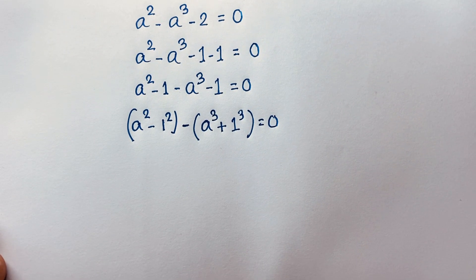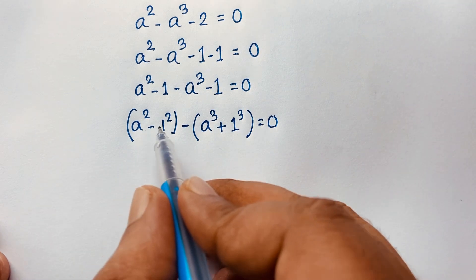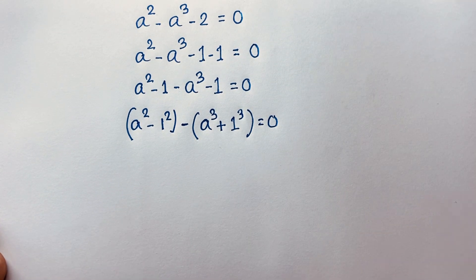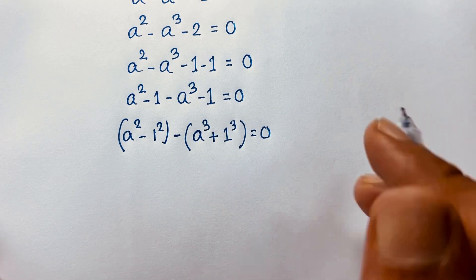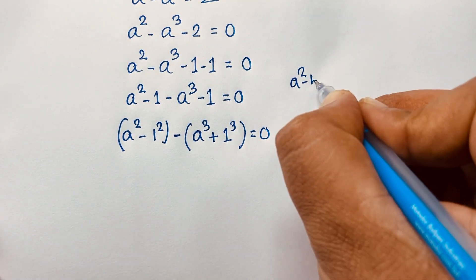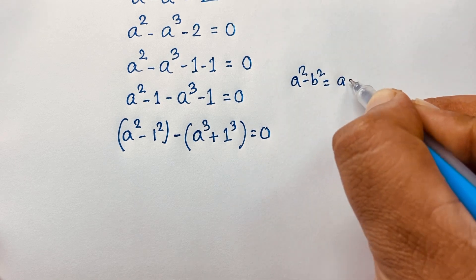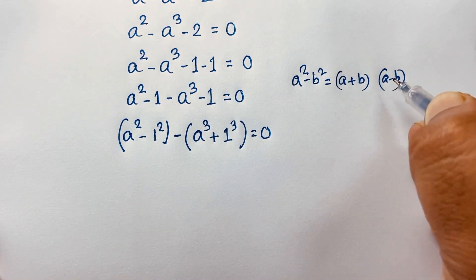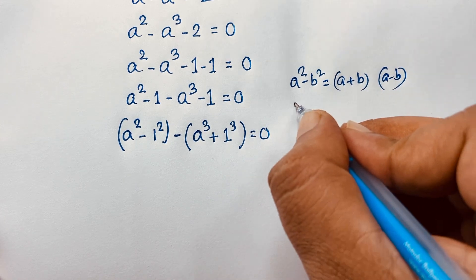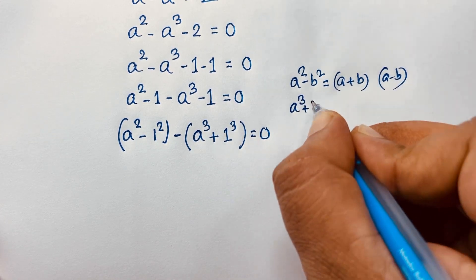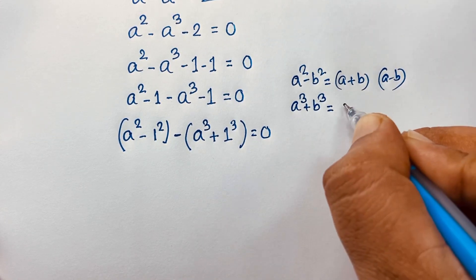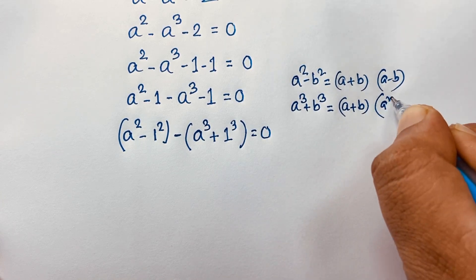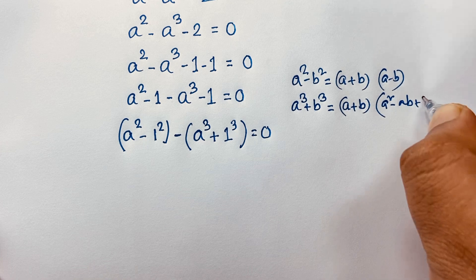Now I can recognize two algebraic identities here. We have a squared minus b squared, and a cubed plus b cubed. The formula for a squared minus b squared is (a + b)(a − b). And the formula for a cubed plus b cubed is (a + b)(a squared minus ab plus b squared).